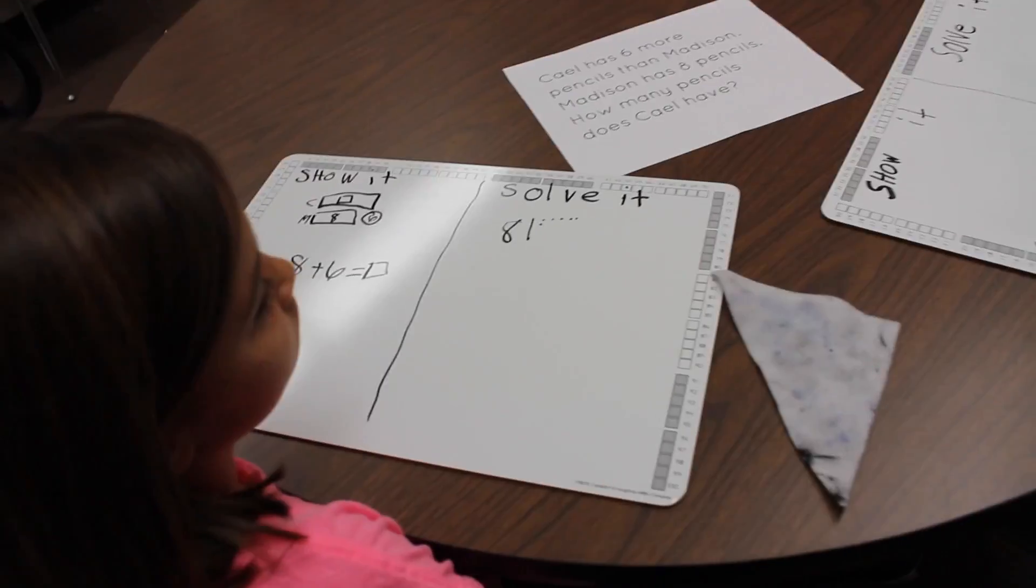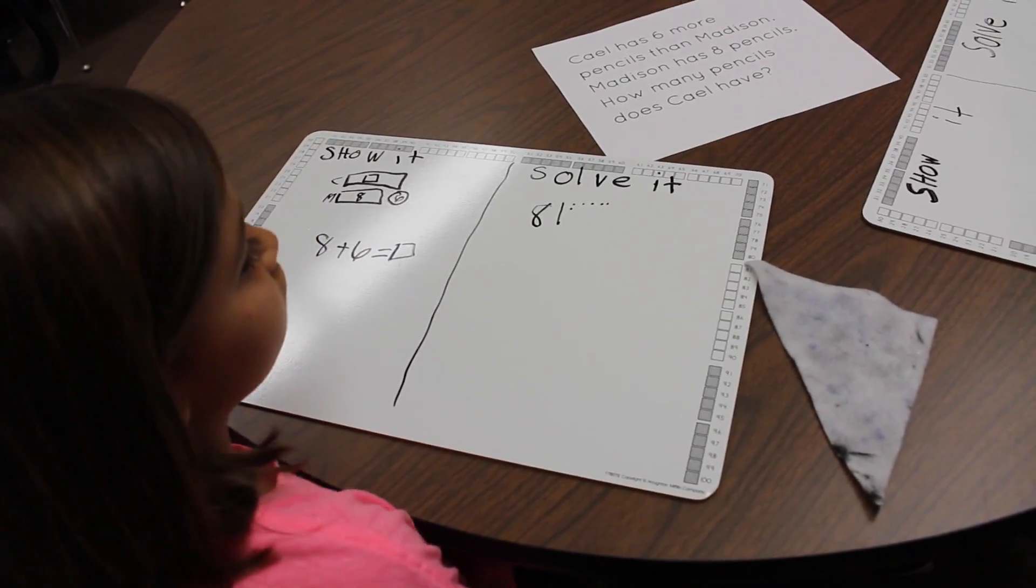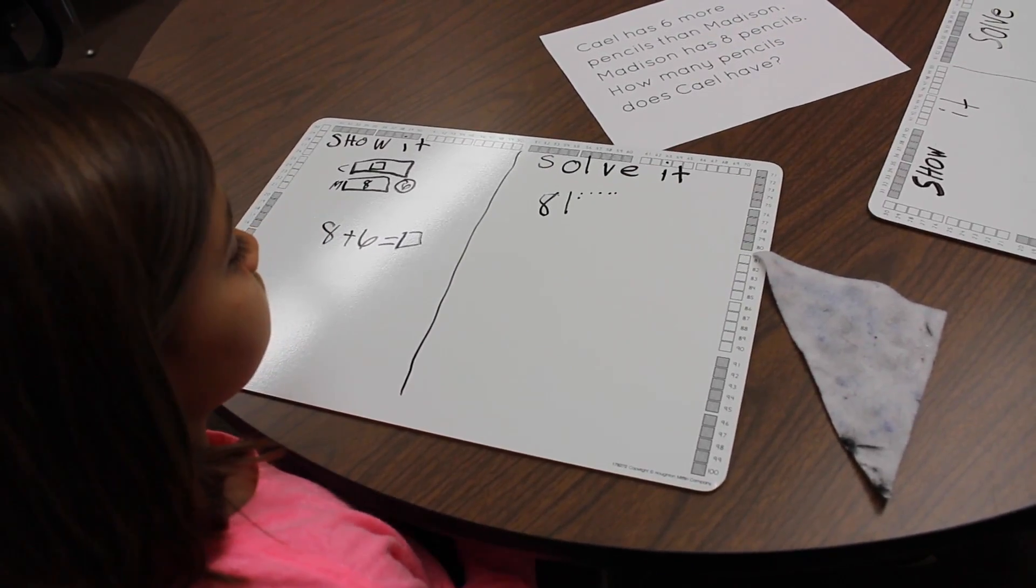Okay. While Cal is finishing Madison, I see you used a counting on strategy. Make sure to show your answer at the bottom. Okay.